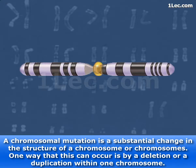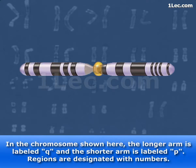A chromosomal mutation is a substantial change in the structure of a chromosome or chromosomes. One way that this can occur is by a deletion or a duplication within one chromosome. In the chromosome shown here, the longer arm is labeled Q and the shorter arm is labeled P.